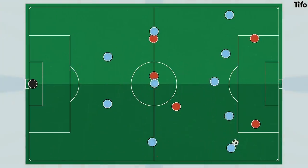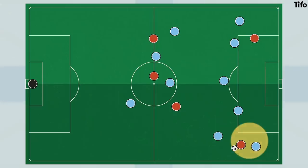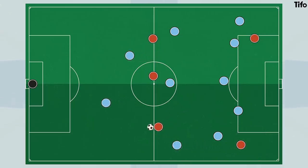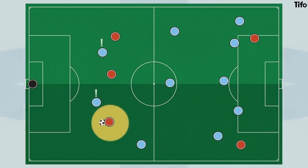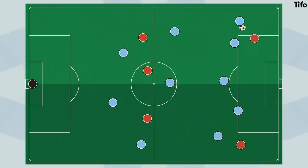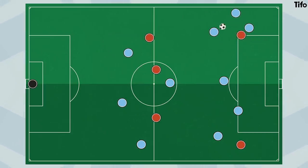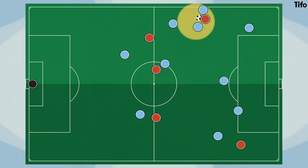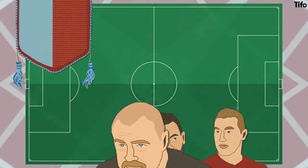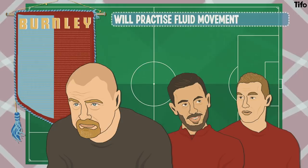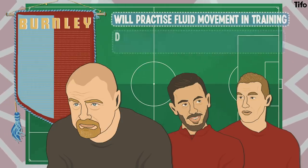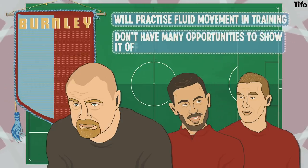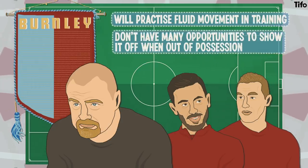In a fluid system, a turnover high up the pitch might lead to dangerous counter-attacks as the team has to adjust back into an organised defensive shape, which is why so many teams who play with fluidity also tend to press in numbers immediately after losing the ball to prevent this from happening. More rigid teams like Burnley will certainly practice fluid movement in training; they just don't have so many opportunities to show it off when they're out of possession so often.